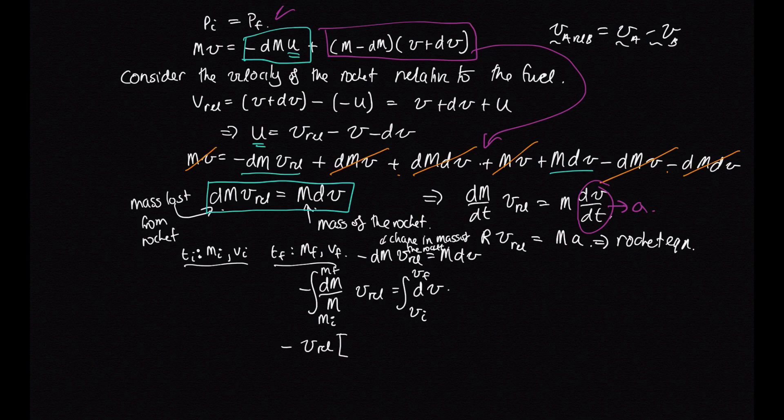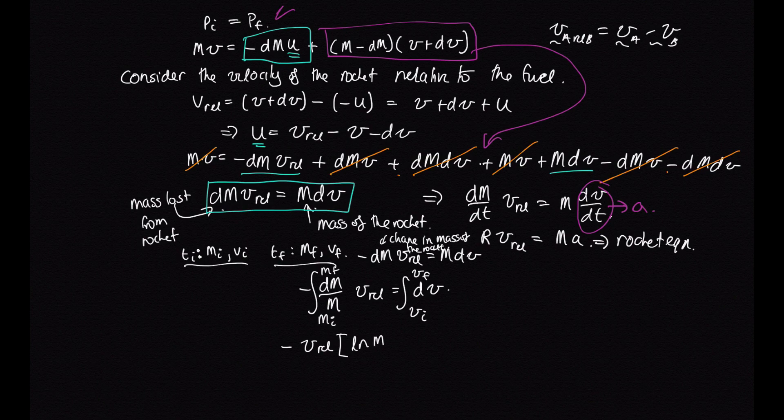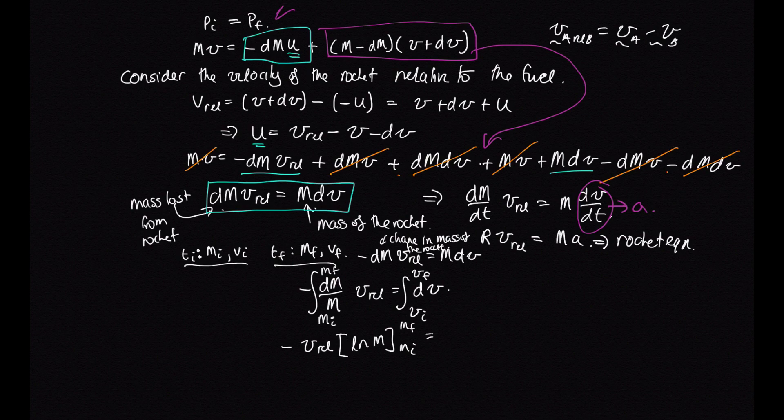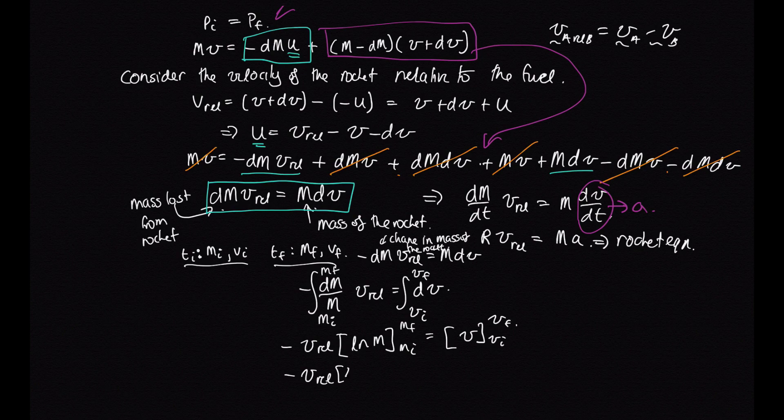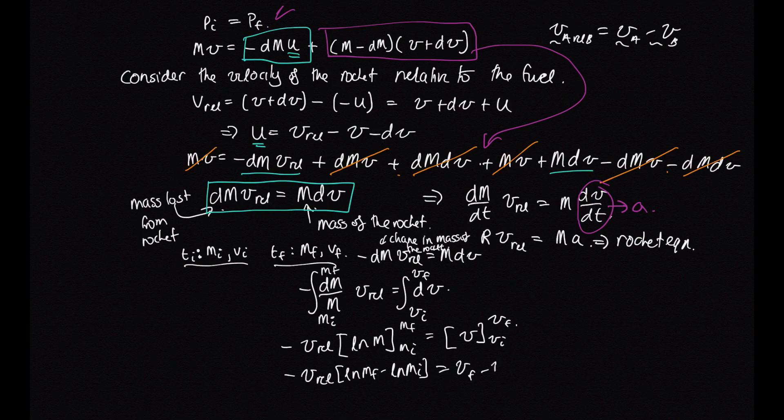times log m from m initial to m final is equal to this thing, which is just v from v initial to v final. So this is equal to minus v_rel, log m final minus log m initial is equal to v final minus v initial.